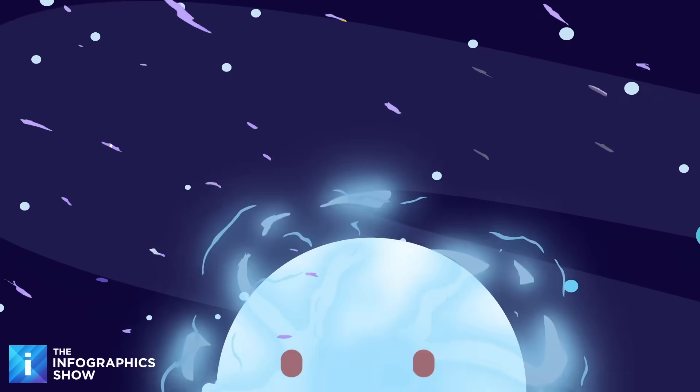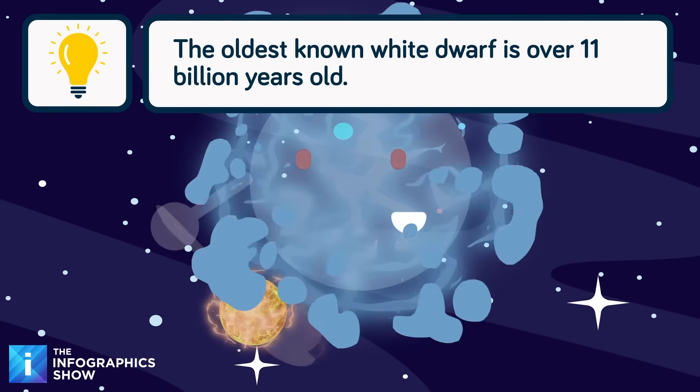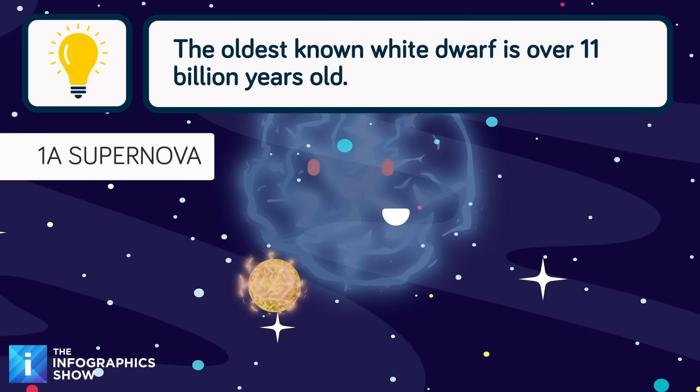Normally, if a white dwarf gains too much weight by stealing mass from a companion star, it goes nuclear, it hits critical mass, and it blows up in what's called a Type 1A supernova.